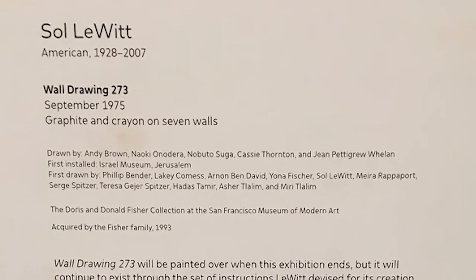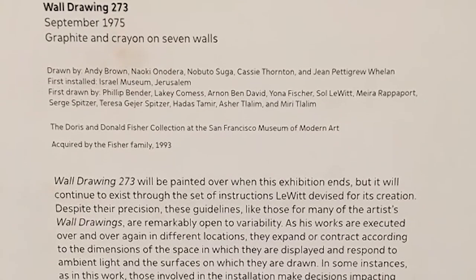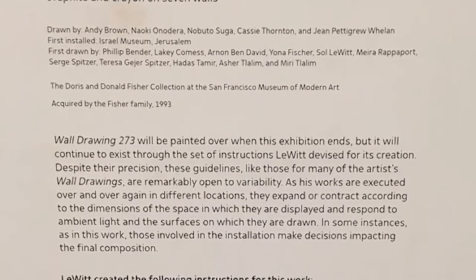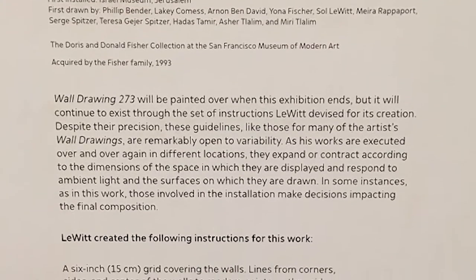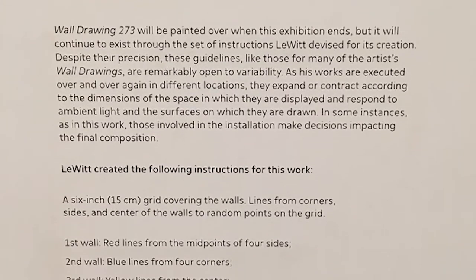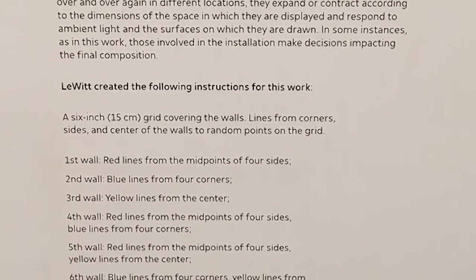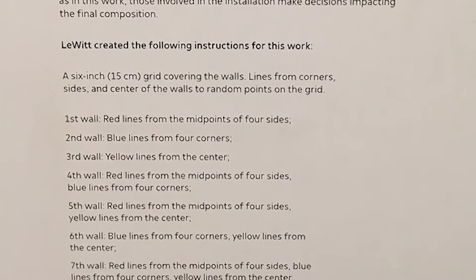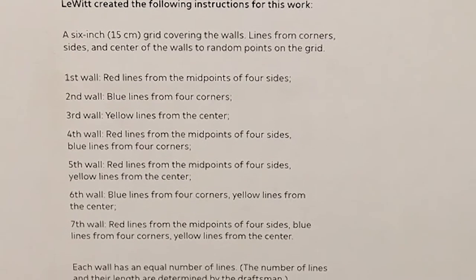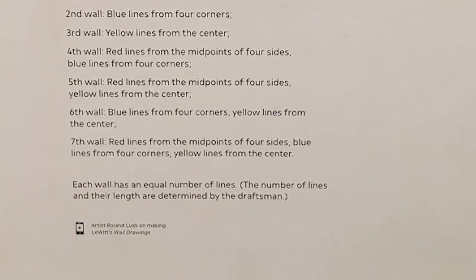The basic instructions for Wall Drawing 273: a six-inch (15 centimeter) grid covering the walls; lines from corners, sides, and center of the walls to random points of the grid. First wall: red lines from the midpoints of four sides. Second wall: blue lines from four corners. Third wall: yellow lines from the center. Fourth wall: red lines from midpoints of four sides, blue lines from four corners. Fifth wall: red lines from midpoints of four sides, yellow lines from the center. Sixth wall: blue lines from four corners, yellow lines from the center. Seventh wall: red lines from midpoints of four walls, blue lines from four corners, yellow lines from the center.